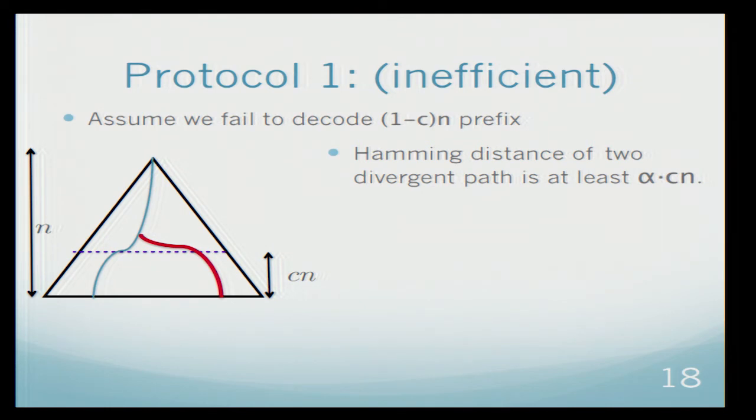Now in order for Bob to be confused between this path and this path, that have Hamming distance alpha cn, the number of errors and erasures must satisfy this thing. There must be enough errors and erasures to overcome the Hamming distance of these two streams.